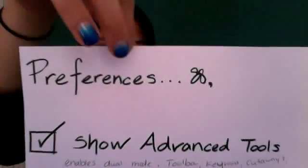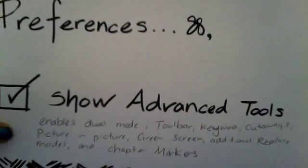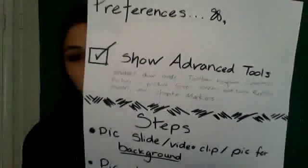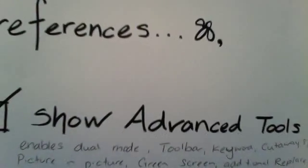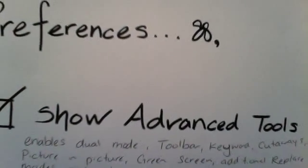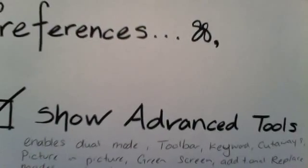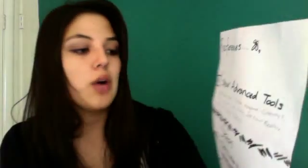If you have a Mac with iMovie, open iMovie up. Once it's open, click on iMovie in the top left corner and click on Preferences. Then click on Show Advanced Tools. What this does is give you advanced options when you click on something, to enable dual mode toolbar, keyword, cutaway, picture in picture, green screen, additional replace modes, and chapter markers.